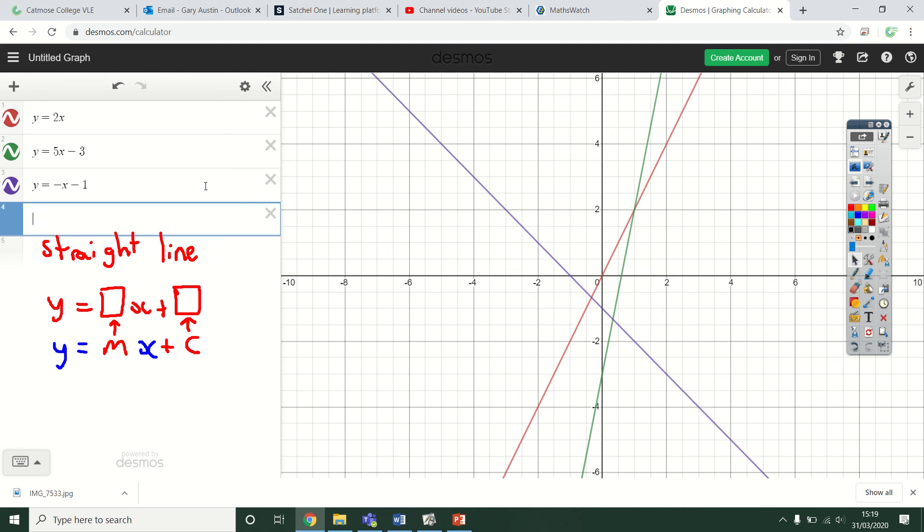I can change things around as well. I can do y equals 3 minus 4x. This time I've written the x on the end, but it's still in this form because it's just minus 4 lots of x and then a positive 3. So that still counts as a straight line.